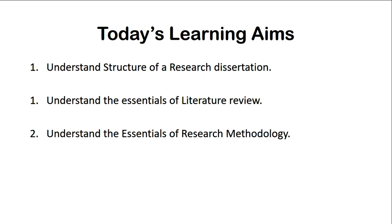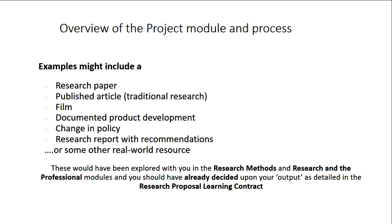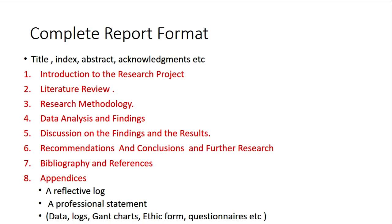What are four possible examples of an undergrad research project? It could be a research paper, a published article, sometimes a film, sometimes a document, or a research report. Looking at a journal report, a research dissertation looks like this: there is a title, followed by an introduction to the research project, then literature review, research methodology, data analysis and findings, discussions on the findings and results, recommendations and conclusions, scope for further research, bibliography and references, and appendices — which can include reflection, professional statements, extra data, file logs, meeting attendance, Gantt charts, ethical forms, questionnaire consents, and permissions.